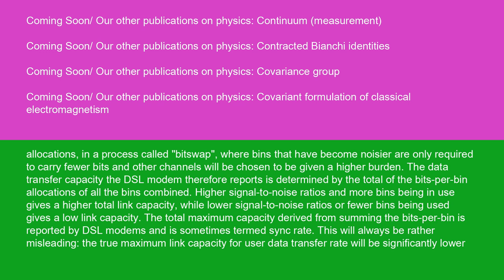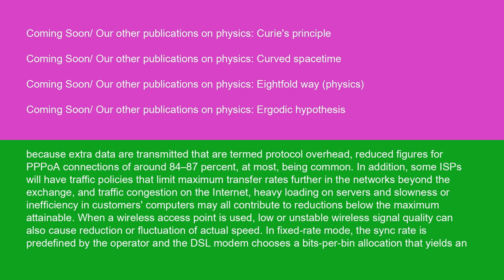The data transfer capacity the DSL modem reports is determined by the total of the bits-per-bin allocations of all bins combined. Higher signal-to-noise ratios and more bins in use gives a higher total link capacity, while lower SNRs or fewer bins gives a lower link capacity. The total maximum capacity derived from summing the bits per bin is reported by DSL modems and is sometimes termed sync rate. However, this can be misleading — the true maximum link capacity for user data transfer will be significantly lower because of protocol overhead, with figures for PPP connections of around 84–87% being common. Some ISPs will have traffic policies that limit maximum transfer rates further, and traffic congestion, heavy server loading, and slowness in customers' computers may all contribute to reductions below the maximum attainable.